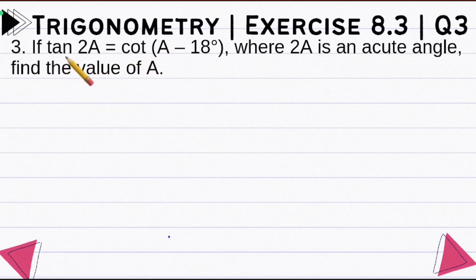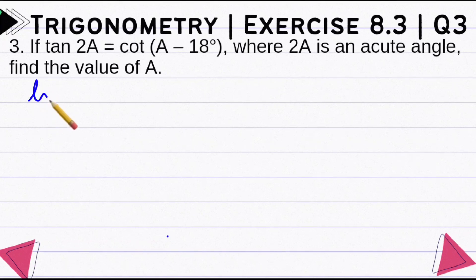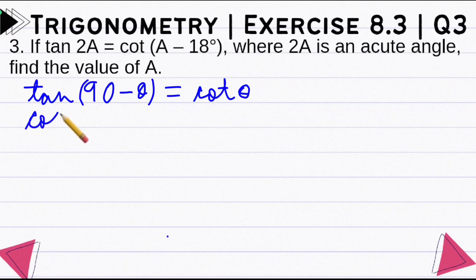Here we have tan and cot. So we have a relation between tan and cot, which we will use complementary angles. If we have written tan(90° minus theta), this becomes cot theta. We can write cot theta as equal, right? And the same, if we have written cot(90° minus theta), we can write it as equal to tan theta.